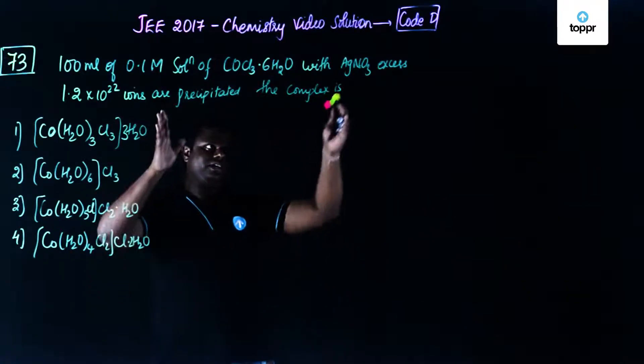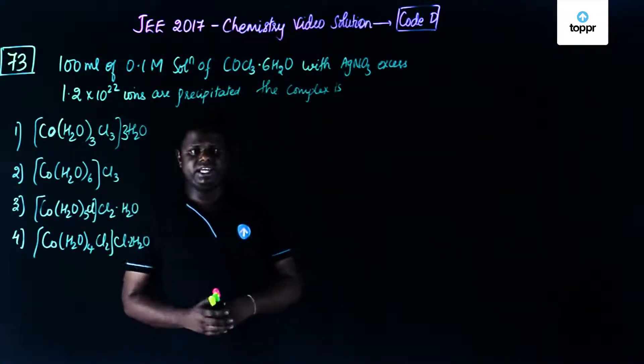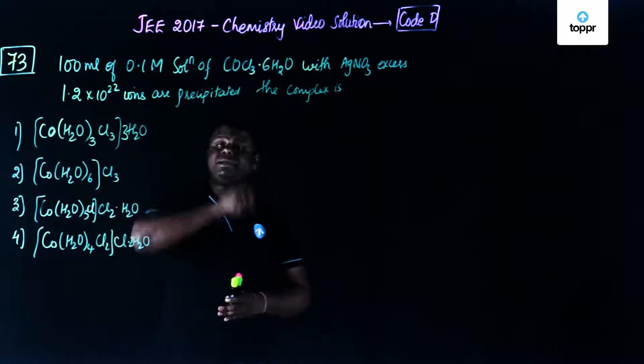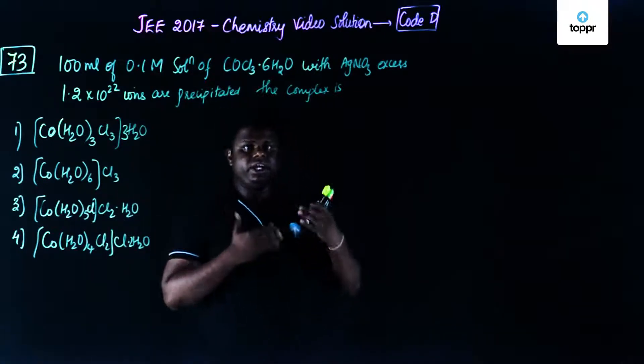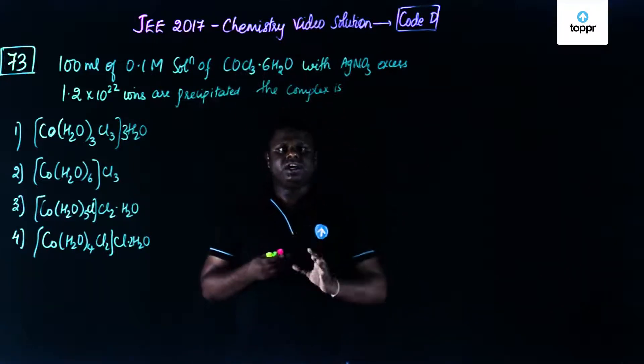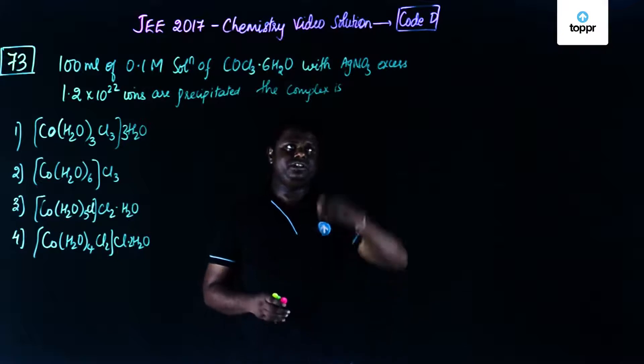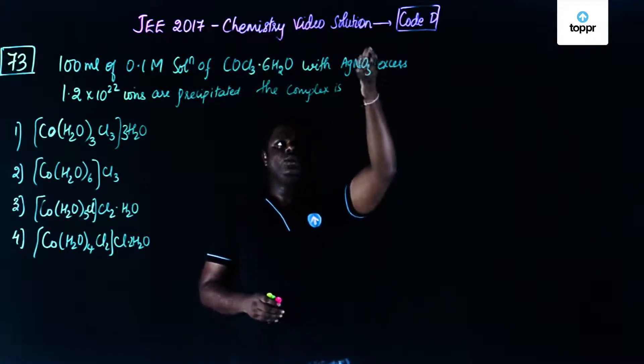Okay, so this particular complex on treatment with AgNO3 gave this many ions, and ions haven't been disclosed. So they are precipitated. You could understand that it could be a precipitate due to the interaction of one of these negative species, negative ion, with AgNO3.